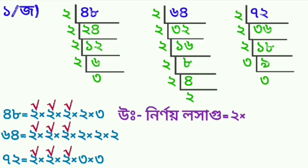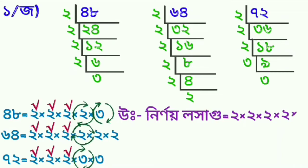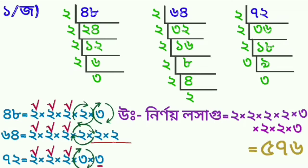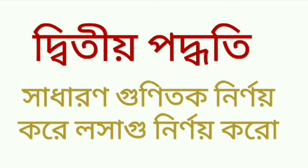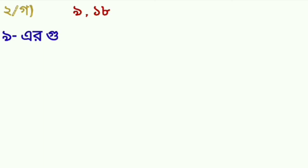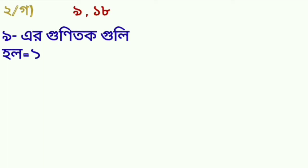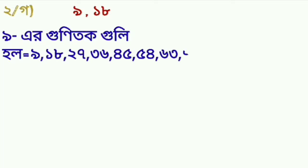প্রতিটির ক্ষেত্রে তিন, এবং দুইটা কমন পাচ্ছে। তাই লসগু = ৩ × ২ লিখে দিলাম। এবার দেখো প্রতিটি সংখ্যার গুণফল করলে আমরা কতটুকু পাচ্ছি — পঁচাত্তর, এটাই নির্ণীত লসগু।